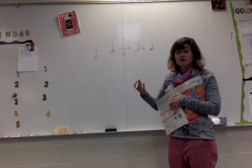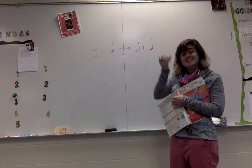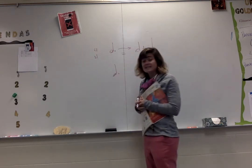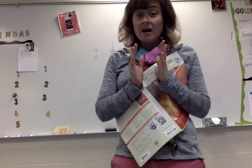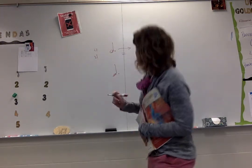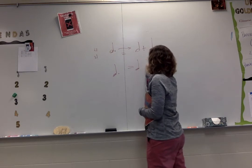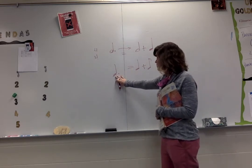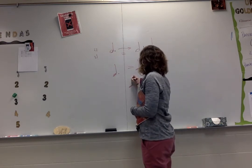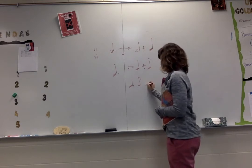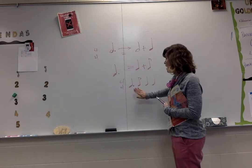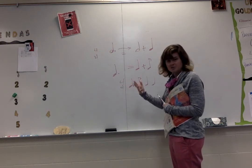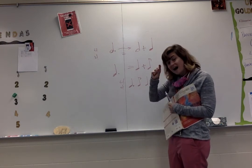Dots can be used on other sorts of notes too, but the same principle always follows: the dot adds half of the original value of the note. The other one we'll see most commonly is a dotted quarter note. Here's our quarter note — we add the dot — that adds half of the original value. If you divide a quarter note in two, you get two eighth notes, so half of the quarter note is one single eighth note. The dotted quarter note equals a quarter note plus an eighth note. Commonly, you'll see the dotted quarter note paired with an eighth note in a measure — ta-di-ta-ta — the dot gives it that syncopated characteristic.